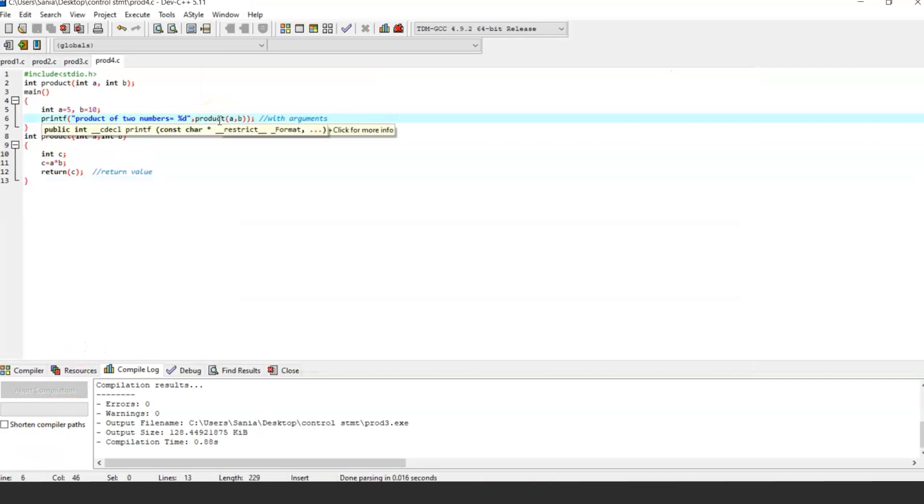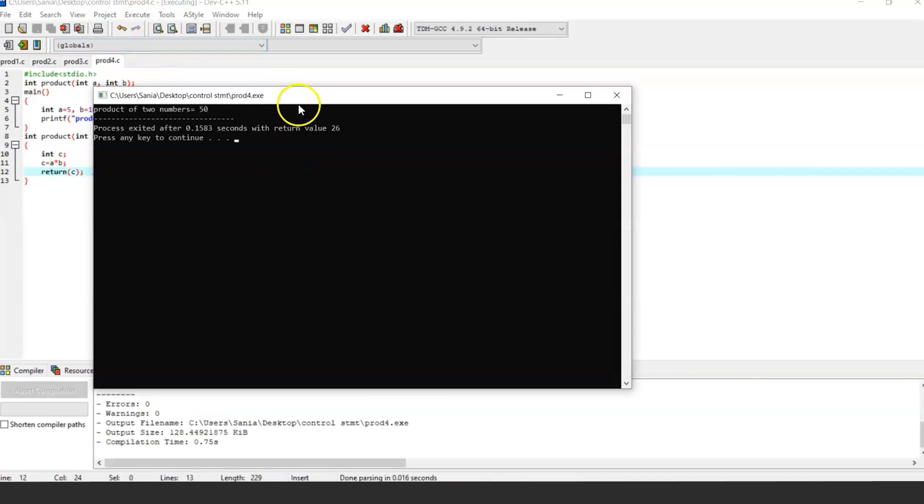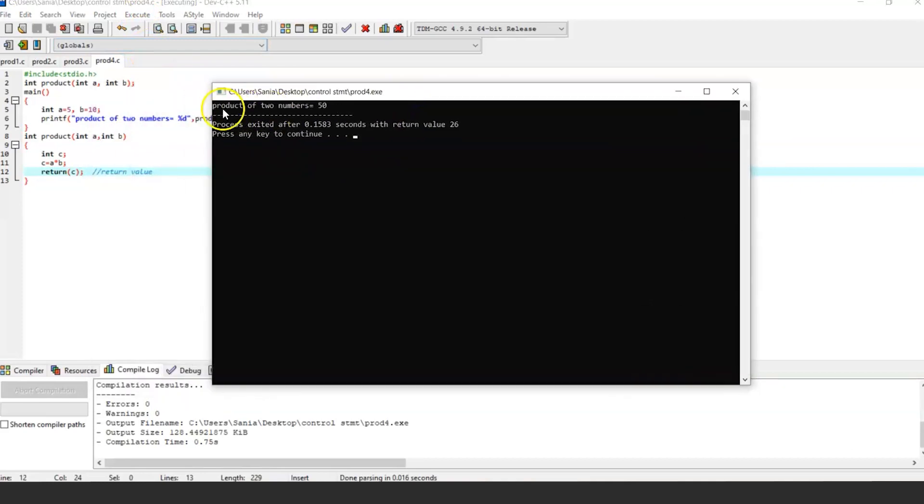Last program to execute is function with arguments and return value. Let's run it. So the output is product of two numbers is equal to 50.